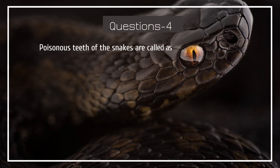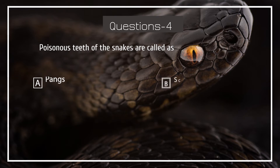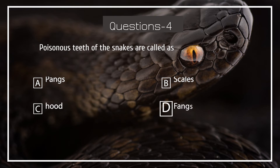The poisonous teeth of snakes are called as — Options: Bangs, Scaves, Hood, Fangs.